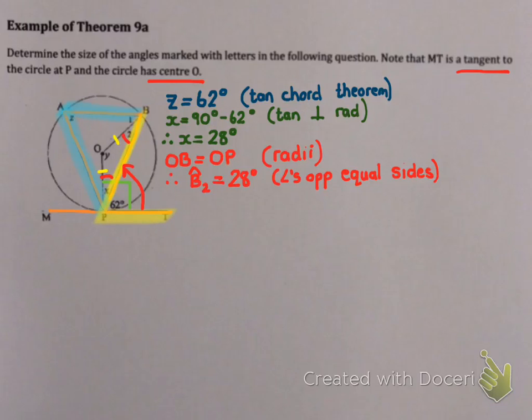Because Y will be 180 degrees minus 28 minus 28. Because we have sum of angles in a triangle. Which means Y is 124.